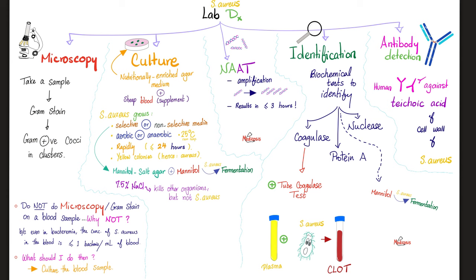How can we diagnose Staph aureus in the lab? We need microscopy and gram stain. We need culture. Staph is very flexible — it can grow on selective or non-selective media, aerobic or anaerobic, at room temperature. The famous yellow-golden colonies — that's why we call it aureus, because aureus means gold. Staph aureus can ferment mannitol, which is why we use the mannitol salt agar. Staph can survive 7.5% salt solution. You can also use a DNA test.